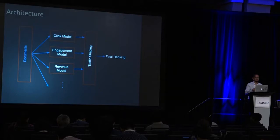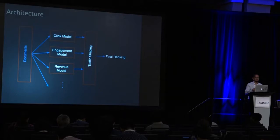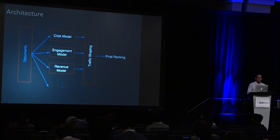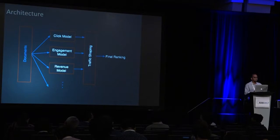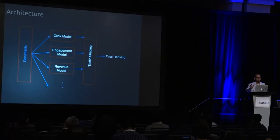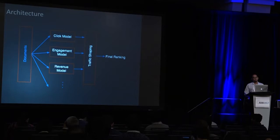Let me briefly describe the architecture at a high level of such a serving system. You have a document pool containing n documents, and for each document you evaluate how it would do for each KPI. A click model tells you the click-through rate; an engagement model tells you, conditioned on the click, how likely the user is to dwell on the document; and if it's an ad you might have a revenue model. This talk is not about the machine learning behind these models — we'll assume the models exist, you pass documents to them, you get scores, and we'll assume these scores are perfect.